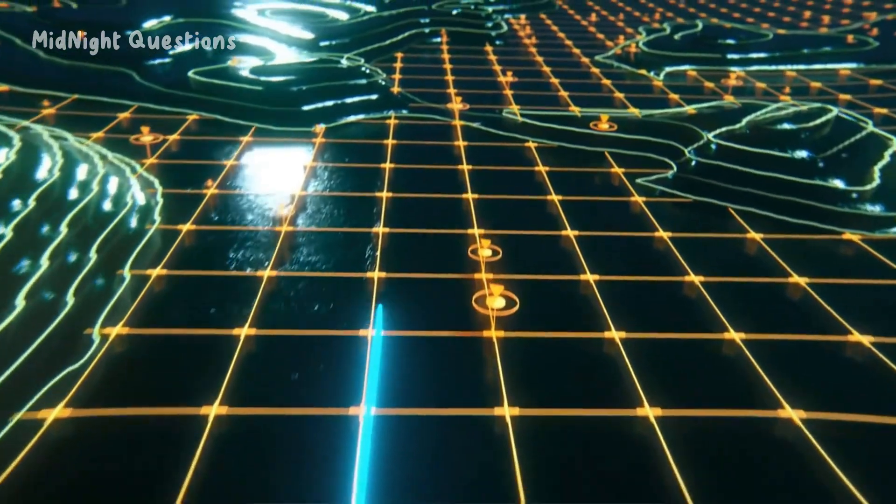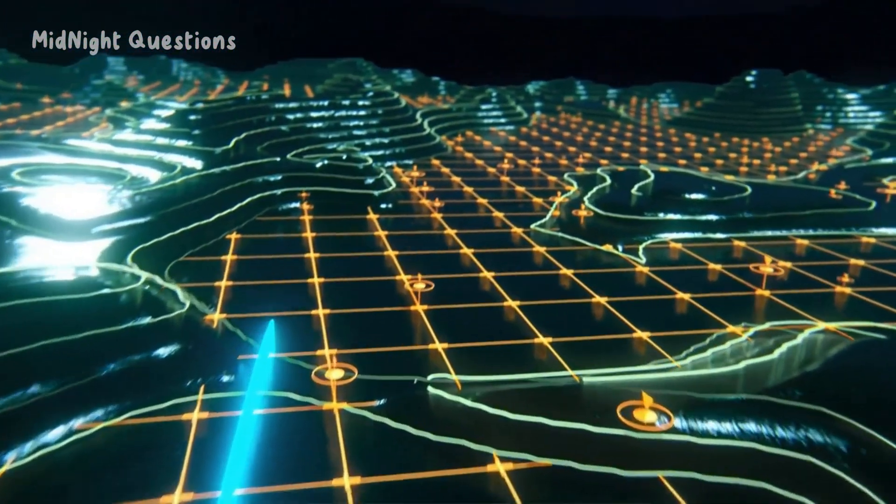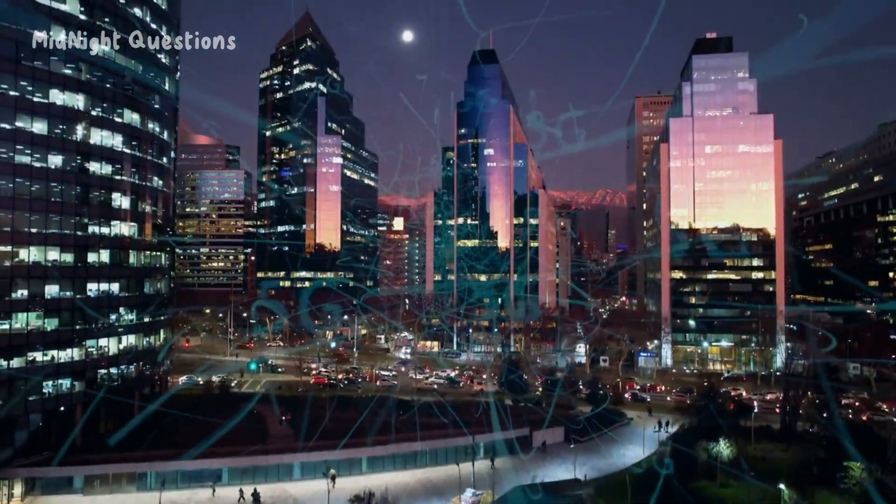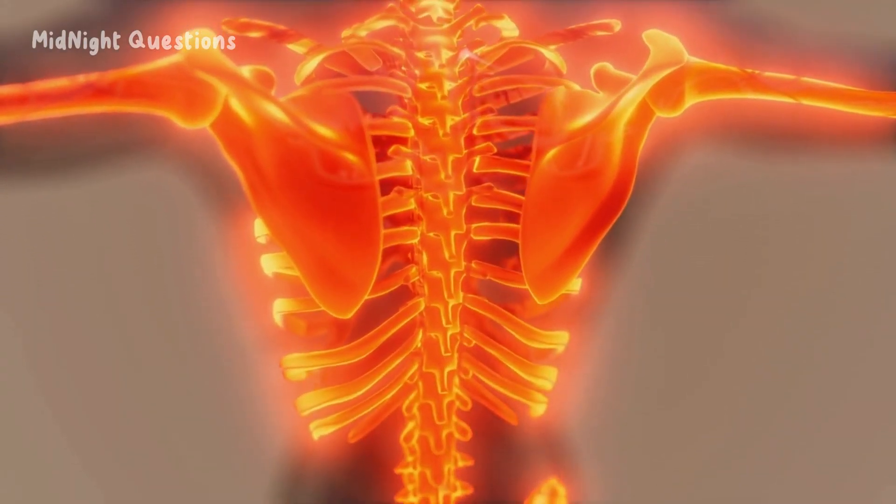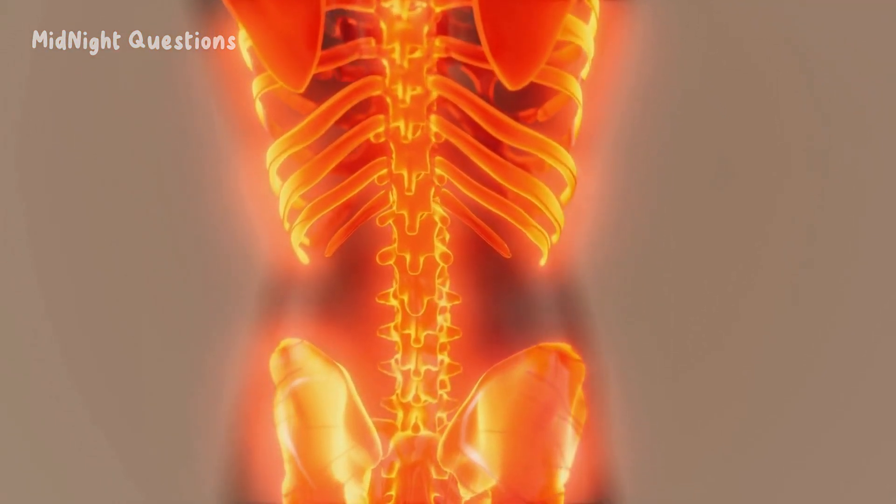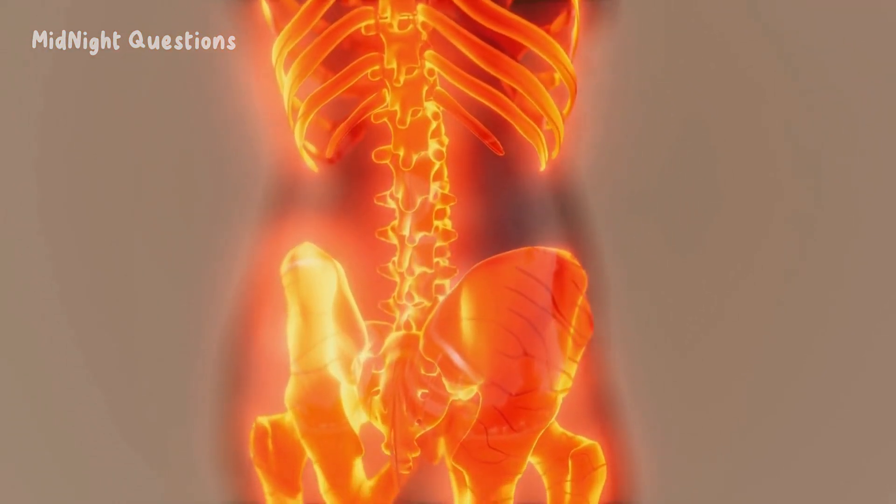One possibility is that humans might continue to evolve biologically. As our environment changes, our bodies might adapt to better suit our needs. For example, if humans begin to live in low-gravity environments, our bodies might adapt to better handle the reduced stress on our bones and muscles.